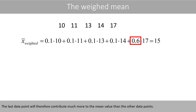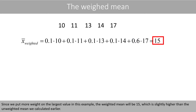The last data point will therefore contribute much more to the mean value than the other data points. Since we put more weight on the largest value in this example, the weighted mean will be 15, which is slightly higher than the unweighted mean we calculated earlier.